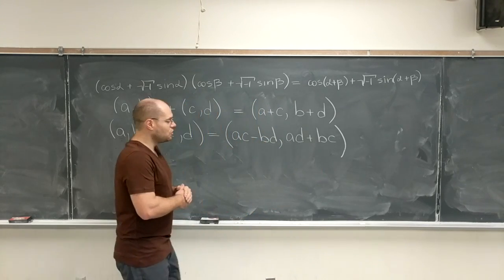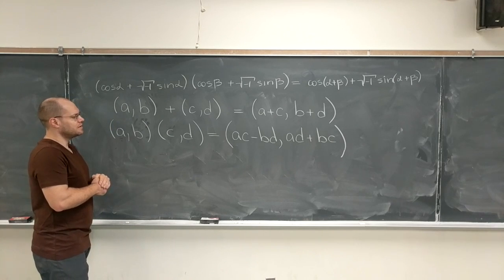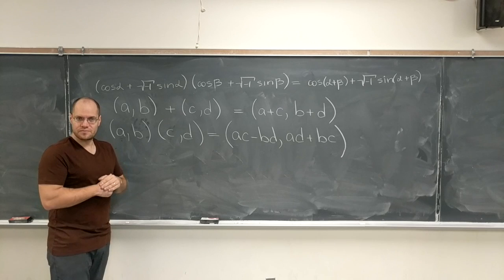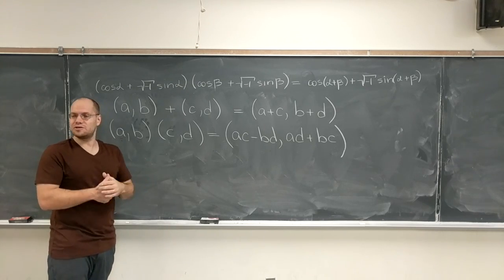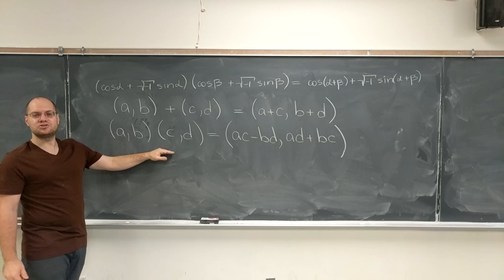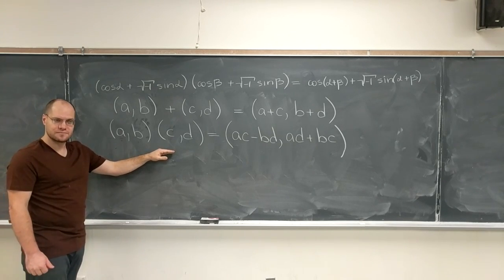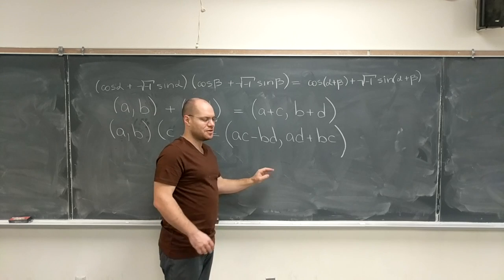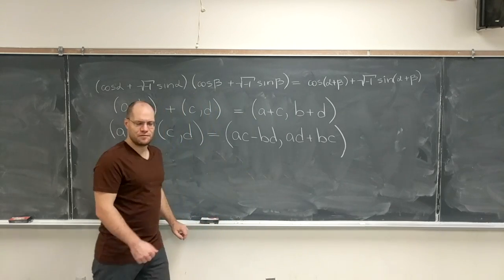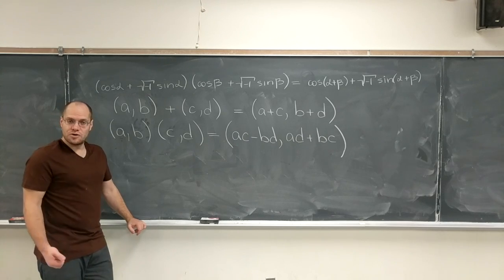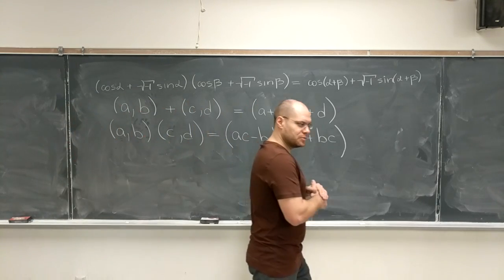So what he does is introduce this new type of object, a pair of numbers, which for us seems easier to accept as something that exists. And then proceeds to postulate rules, which he knows will work out perfectly because of all the work that came before. And so all of the confusion is removed.